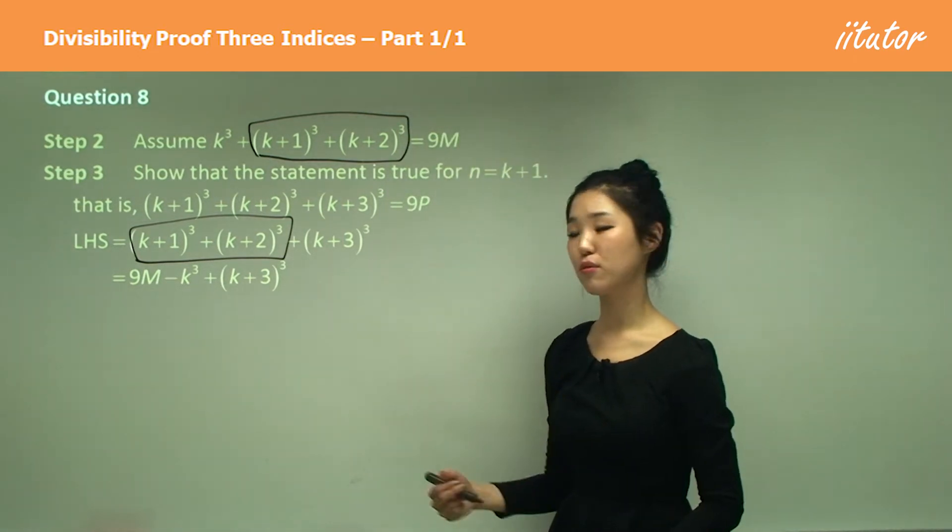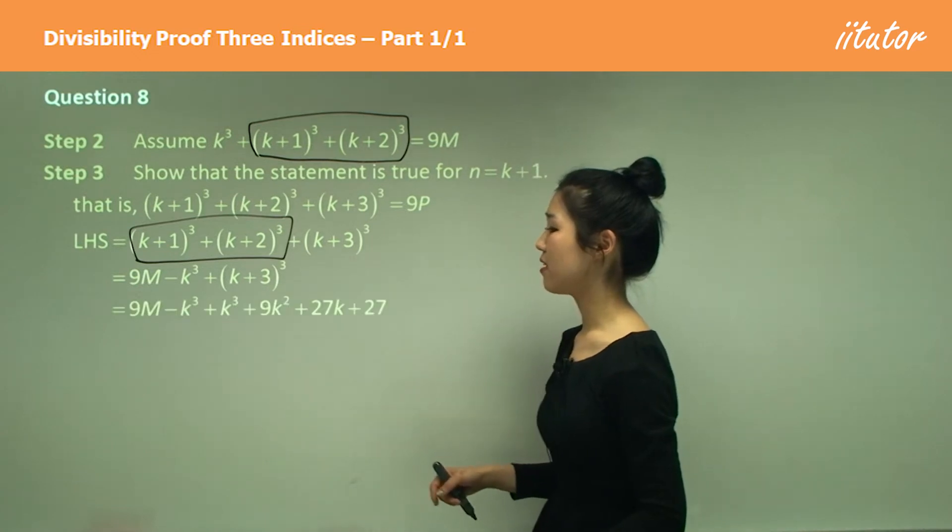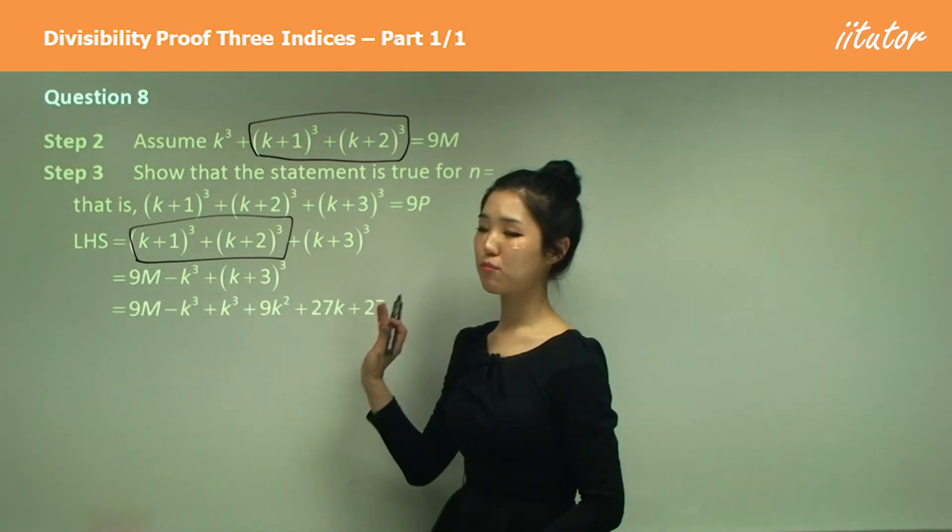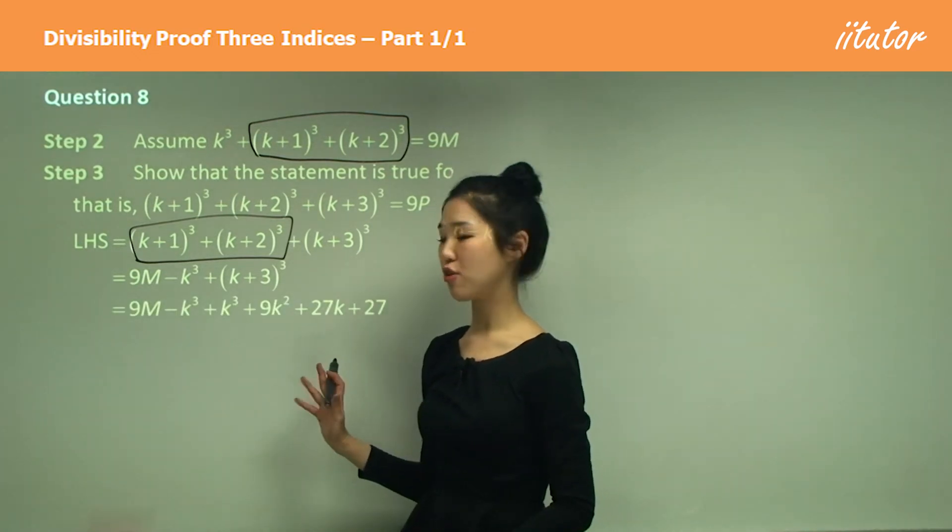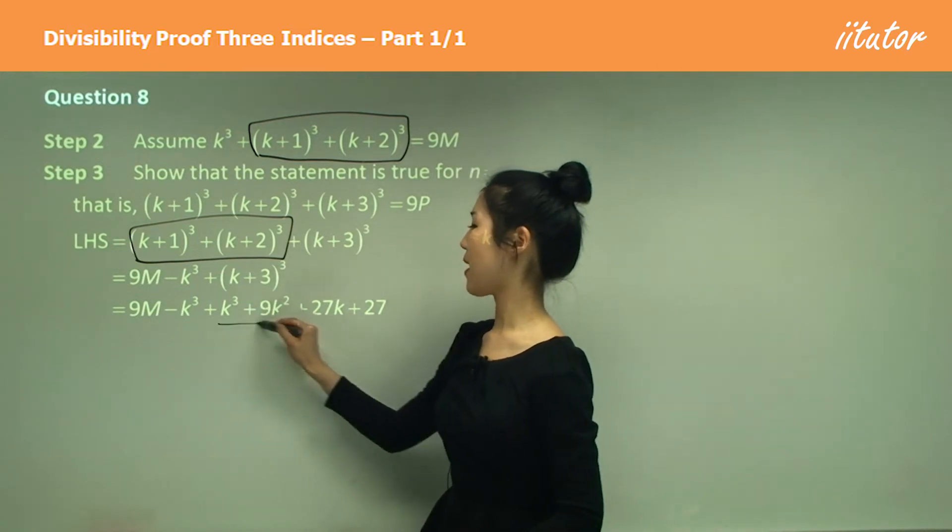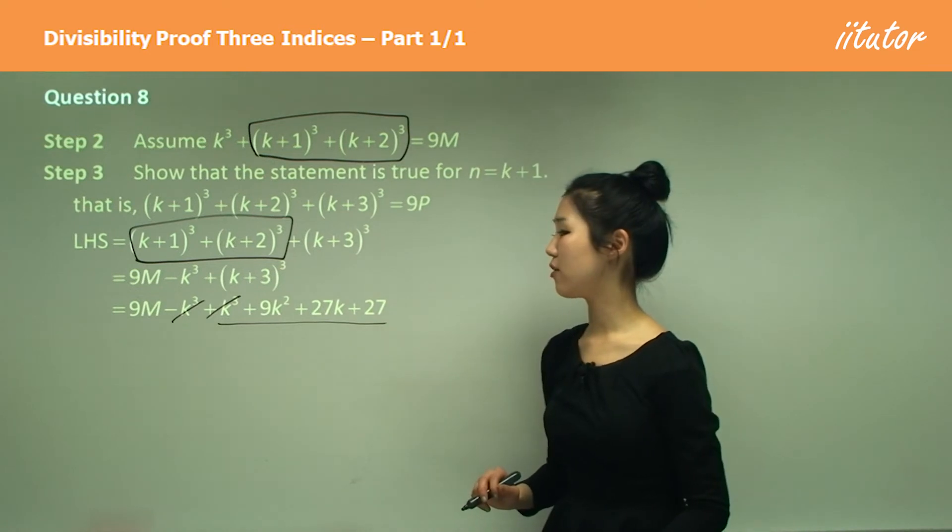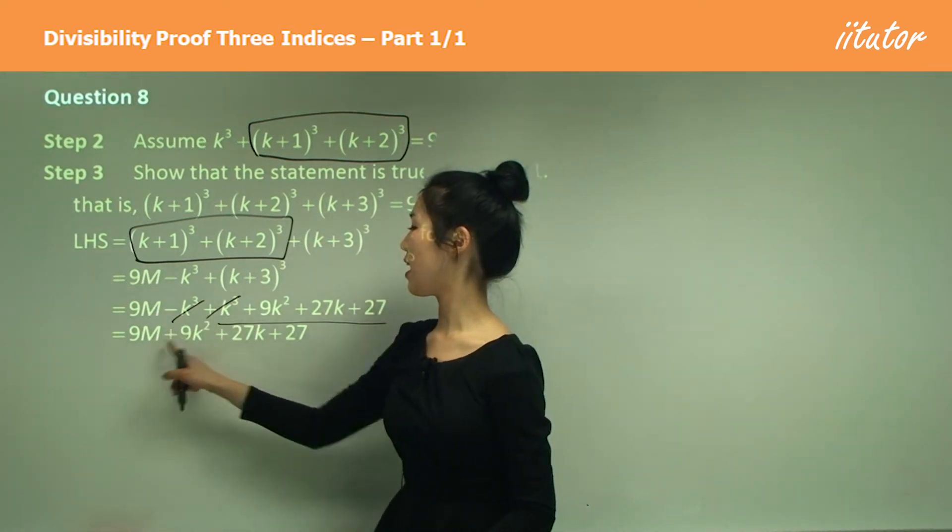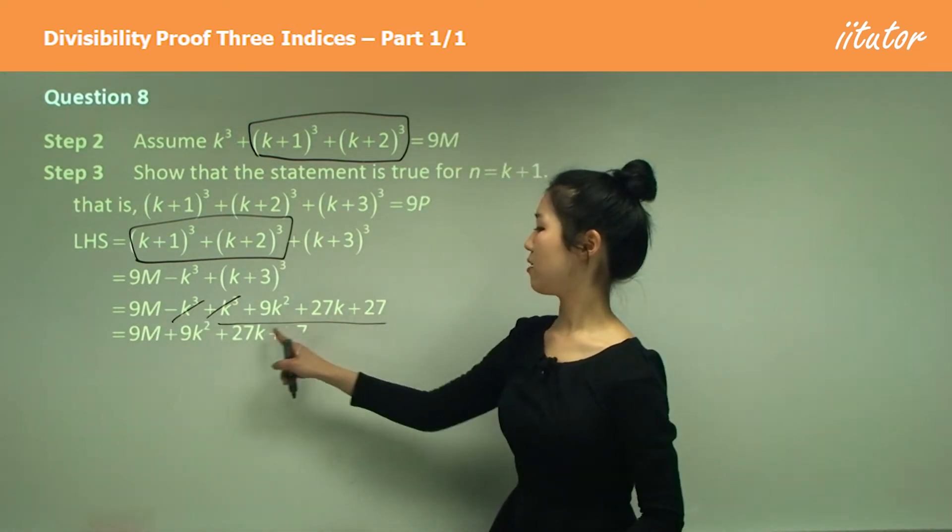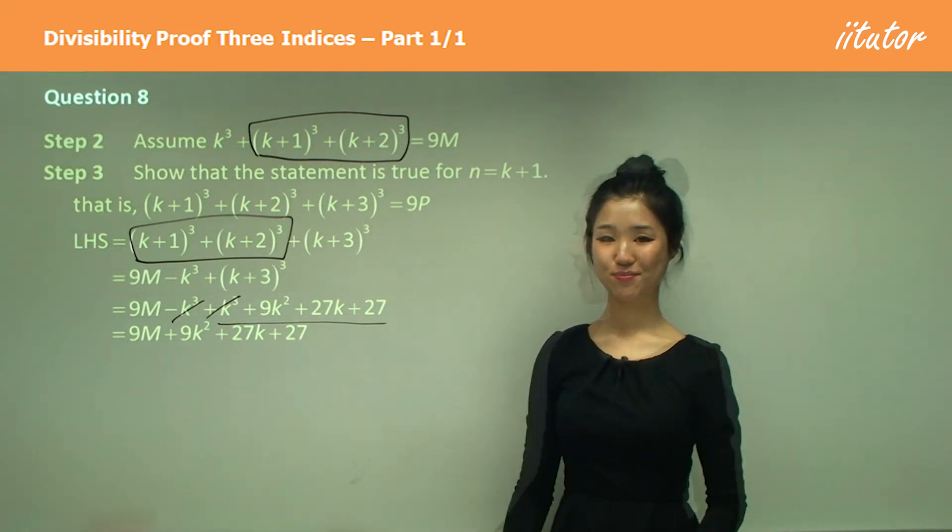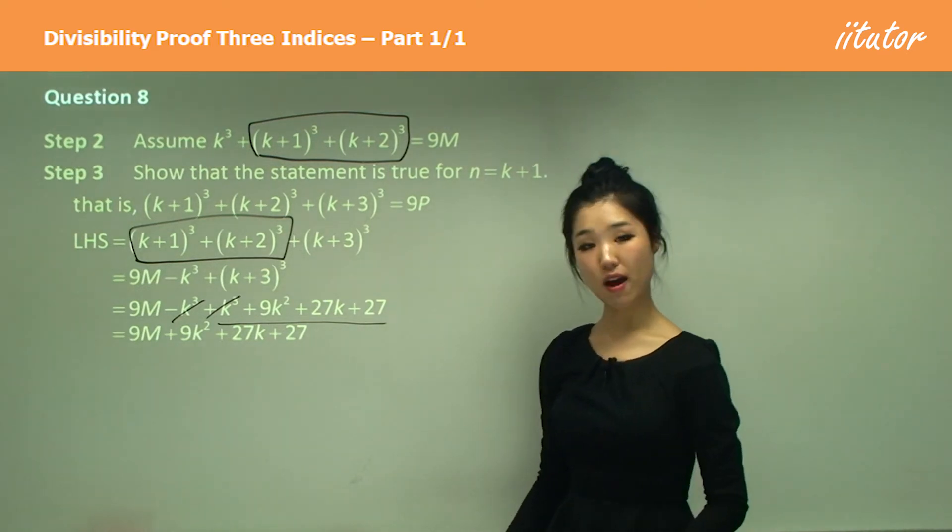So now I'm going to expand and simplify. I'm pretty sure you guys all know how to expand out your cubics. This is how I expanded it out. And we know that this cancels out, so the only thing that's left is 9m, 9k squared, 27k and 27. And I see that they're all divisible by 9.